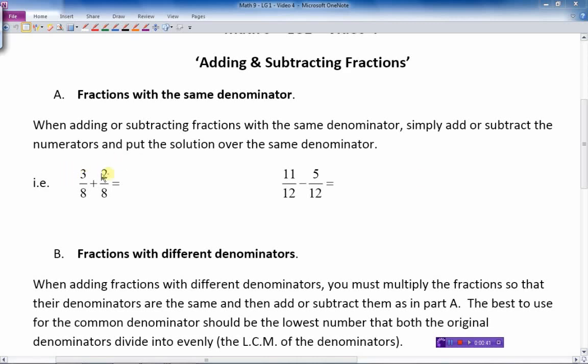When we do this first example here, we're going to add the numerators, the top numbers, and we'll just put them over top of the same denominator that the question started with, since they're both the same. And of course, three plus two is five, and eight, and there's our answer, five-eighths for the first question. Three-eighths plus two-eighths is five-eighths. I think that makes sense.